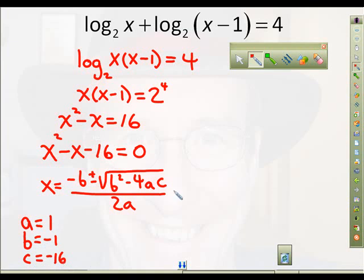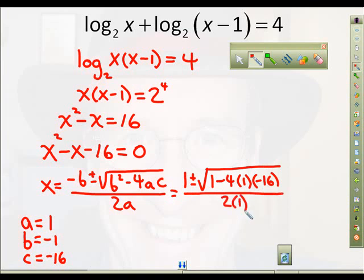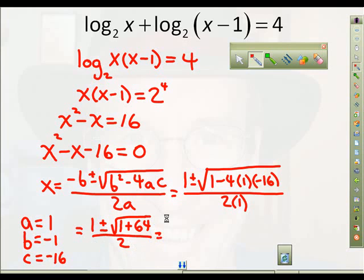Now, plugging into this formula, let's see what we have here. We have negative b. So a negative, negative 1, that's going to be 1 plus or minus b squared, which is 1 minus 4ac, all over 2 times 1. Any questions about that? Now, what that gives us is this. We have 1 plus or minus the square root of 1 plus, what is 4 times 16? 64. 64.